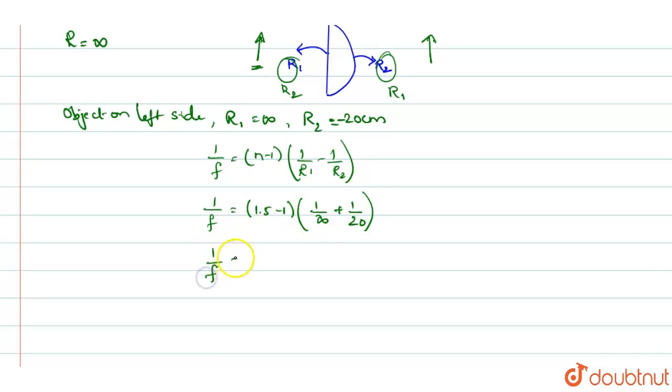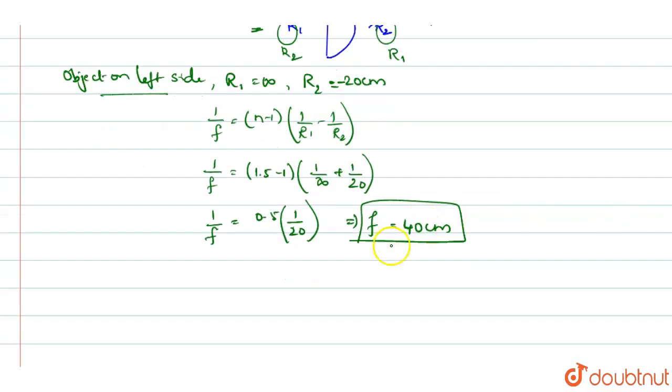So 1/F = 0.5 × (0 + 1/20) = 0.5/20. Therefore F = 40 cm. This is the focal length when the object is on the left side. Since the focal length is positive, the lens behaves as a convex lens.